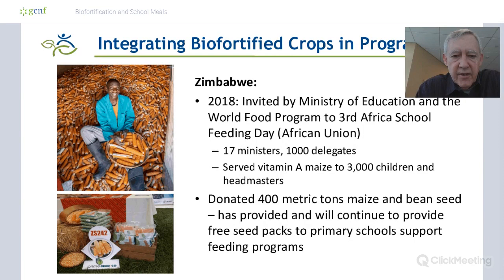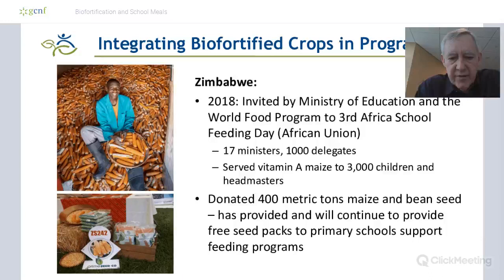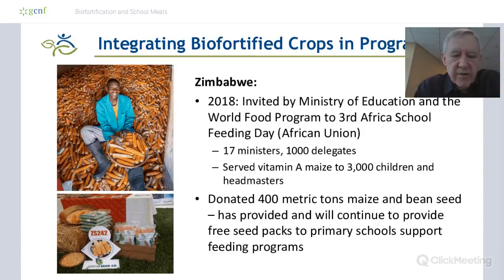Here's another example in Zimbabwe. In 2018, we were invited by the Ministry of Education and the World Food Program to the third Africa School Feeding Day, and we talked about using orange maize in school feeding programs. Harvest Plus can donate initial seeds for these programs. Other programs arrange with farmers in the local area to grow the foods and then purchase from local farmers. In other cases, the children grow the foods at the school themselves, along with the faculty.